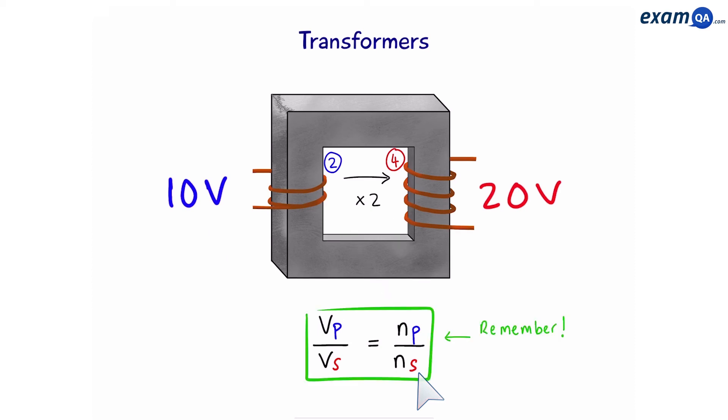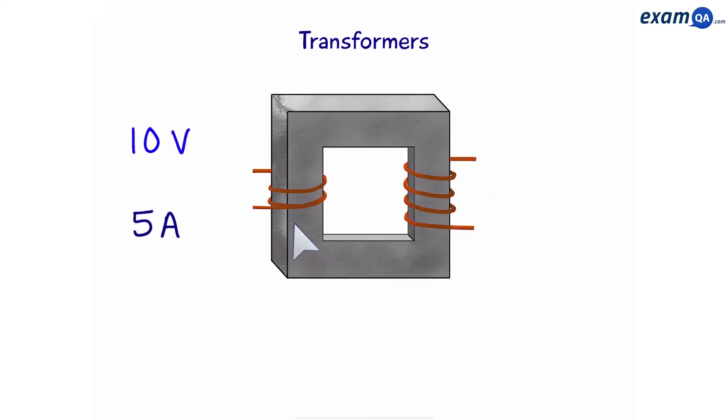Now, make sure you remember this one. So, we have one more to do. Let's say in the primary coil, we have a 10 volt potential difference and a 5 amp current. Of course, we can see that the voltage is going to increase as the number of coils has increased. However, the current will decrease. So, using p equals vi, we can create an equation from this. Now, remember, p is the same on both sides.